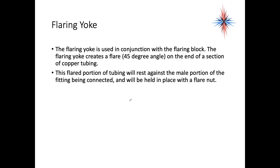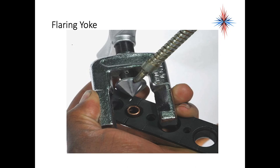The flaring yoke creates the flare, which is a 45 degree angle roughly at the end of a section of copper tubing. This flared portion of the tubing will rest against a male portion of the fitting being connected and it's held in place with the flare nut. This is the flare yoke. You see that the tubing sticking out of the flare block, and you see that the triangle side, the triangle wedge, is going to go down inside that pipe.